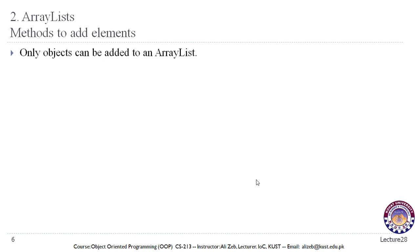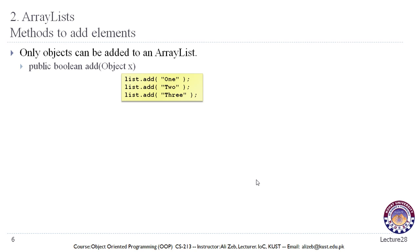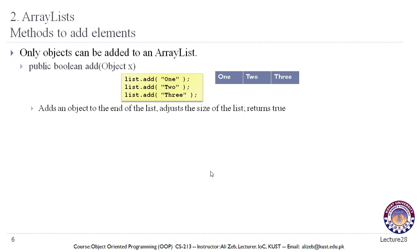Only objects can be added to an ArrayList. The public boolean add method takes the object to add as an argument — for example, list.add(1), list.add(2) — adding elements one after the other. It adds an object to the end of the list, adjusts the size of the list, and returns true.